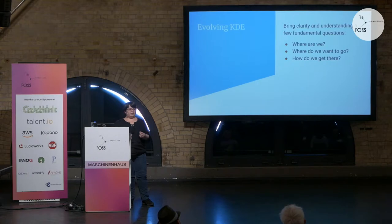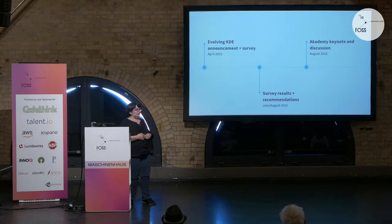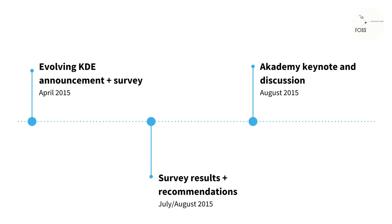The goal was to bring clarity to the questions: where are we, where do we want to go, and how do we get from here to there? It started in April 2015 with an announcement that we need to talk about and find answers to these questions. We did a survey, published the results and some recommendations based on it, and I presented that at the keynote of our annual conference.